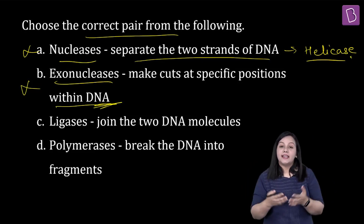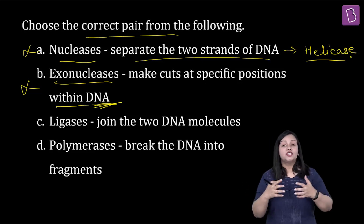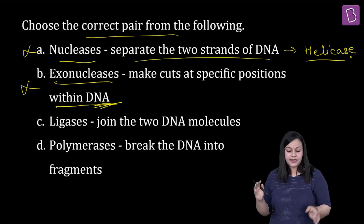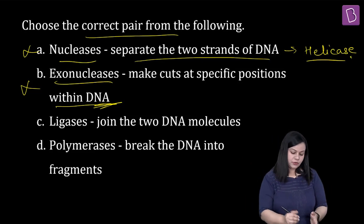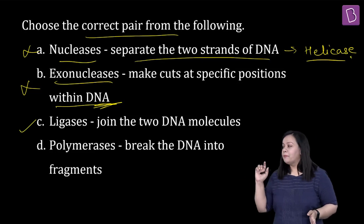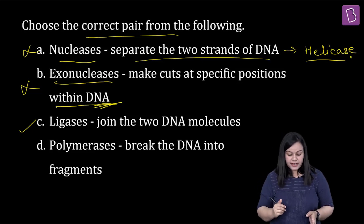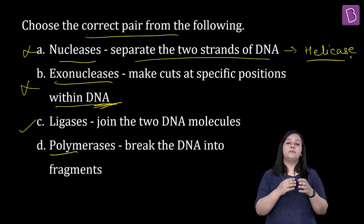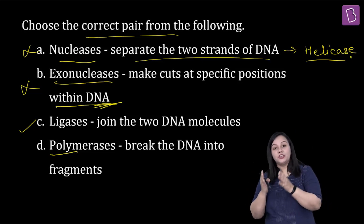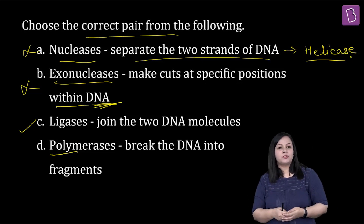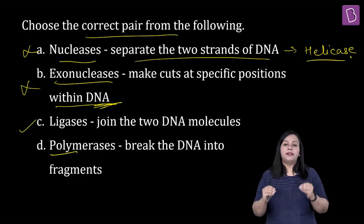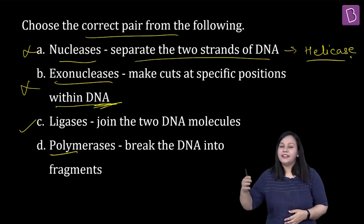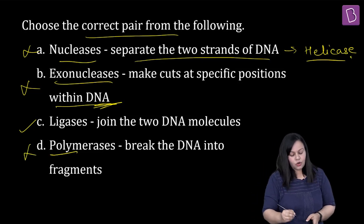Going to the third one — ligase. Ligation matlab hota hai chipkana, jorna, join karna. Ligation basically refers to joining of two molecules together, and here they have described it as joining of two DNA molecules — which is a very correct option. Hence option C would be your right answer. But let us still have a look at option 4 — polymerases break the DNA into fragments. This is not the right answer at all. Poly means many; polymerization basically means building up of a polymer. DNA and RNA are polymeric nucleic acids made up of nucleotides. Polymerases synthesize this polymeric molecule — so they don't break DNA into fragments; they actually synthesize it. This option also becomes incorrect.